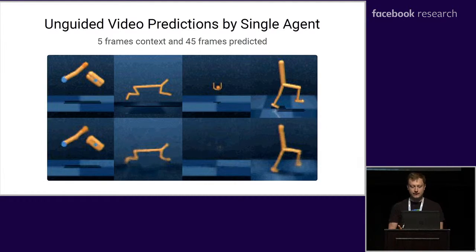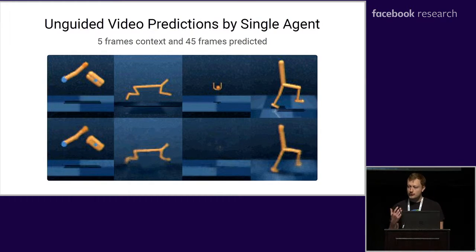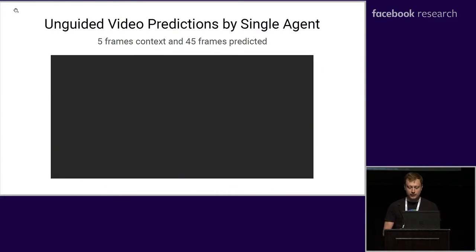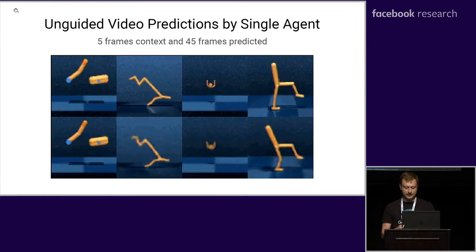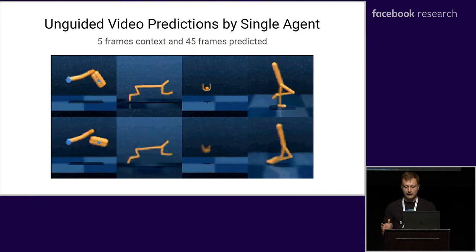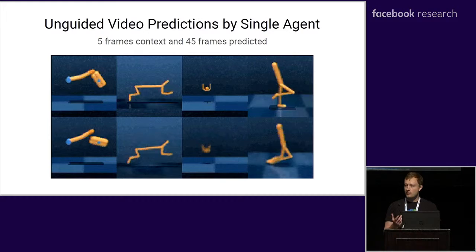Here we can see video predictions of a single agent trained on all these tasks. The top row shows the exploration behavior as the agent is exploring the environments. The bottom row shows video predictions given only the first five frames and the action sequence. We can see that this compact sequence of latent states really enables accurate video predictions.